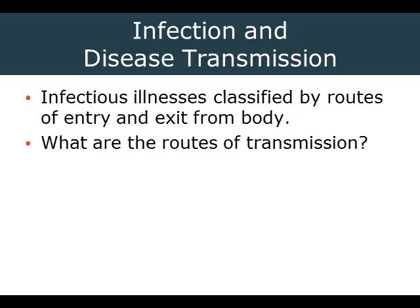Infectious illnesses are classified by their routes of entry and exit from the body. The ones we're most concerned with are airborne, sexually transmitted, bloodborne, and gastrointestinal. There are others, of course, but those four categories generally cover the major routes of transmission.